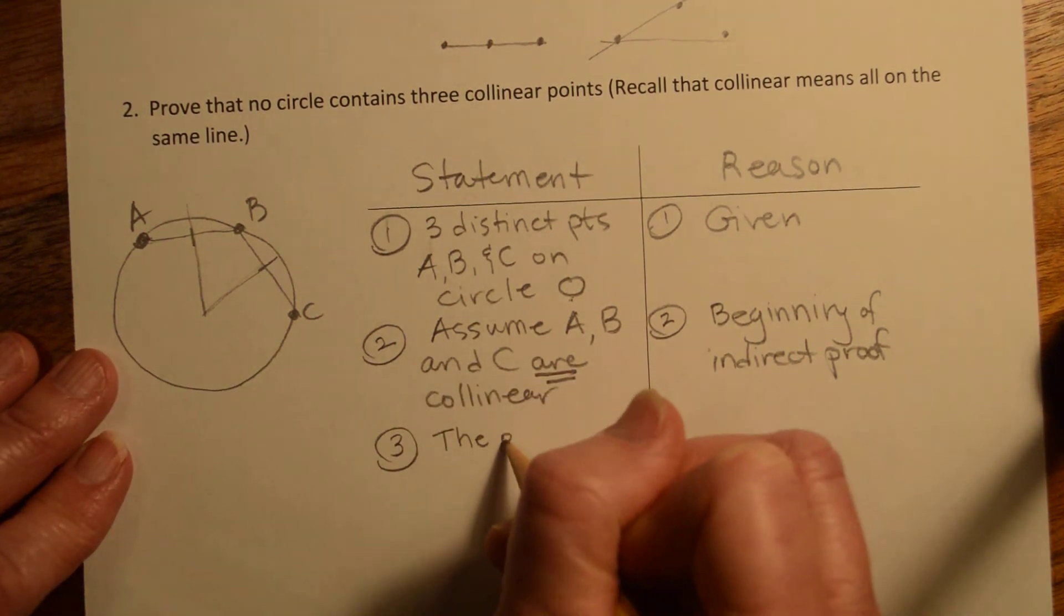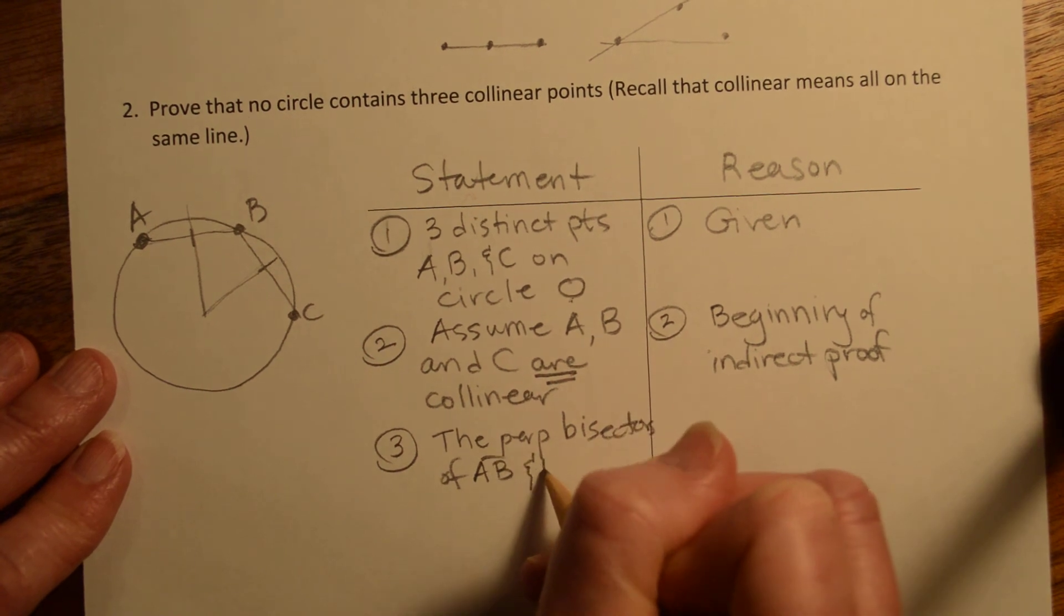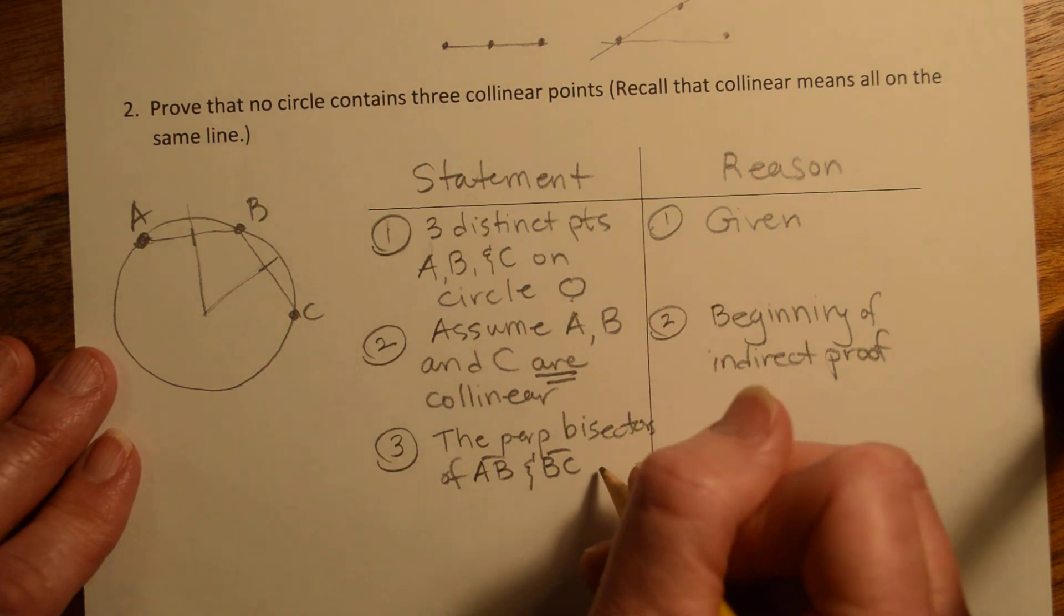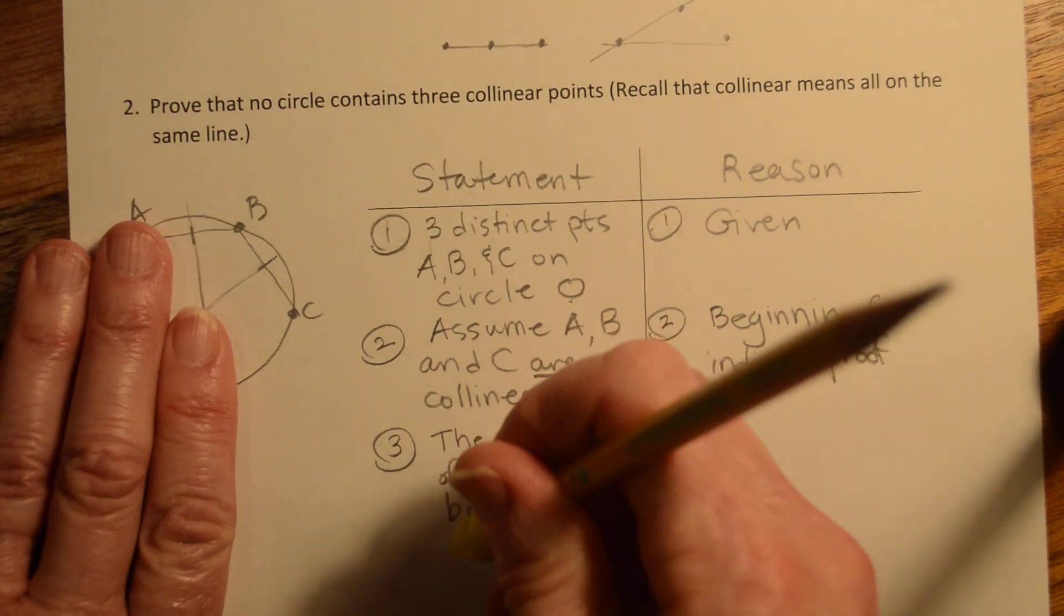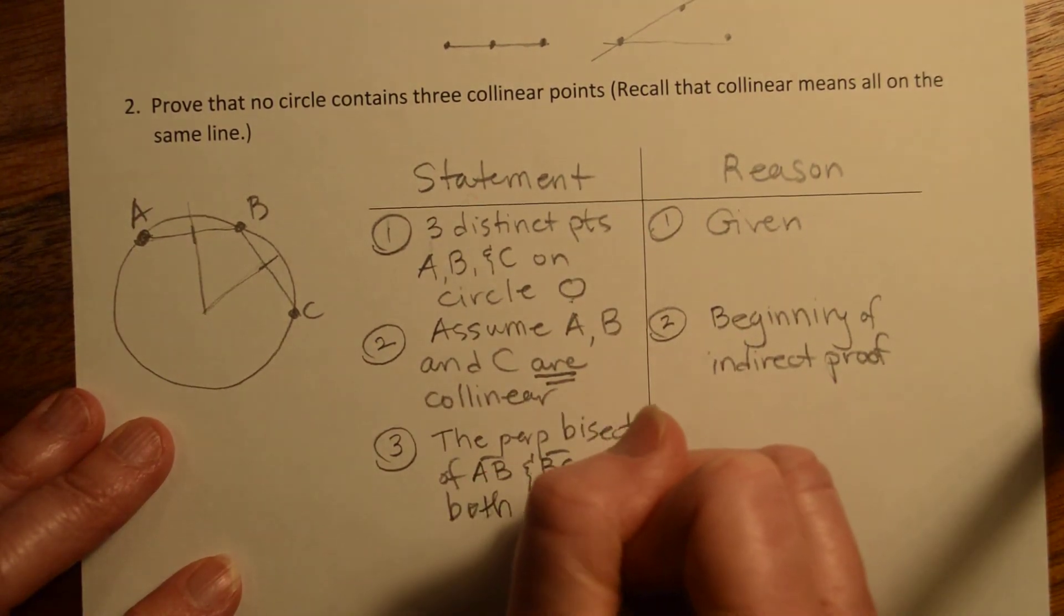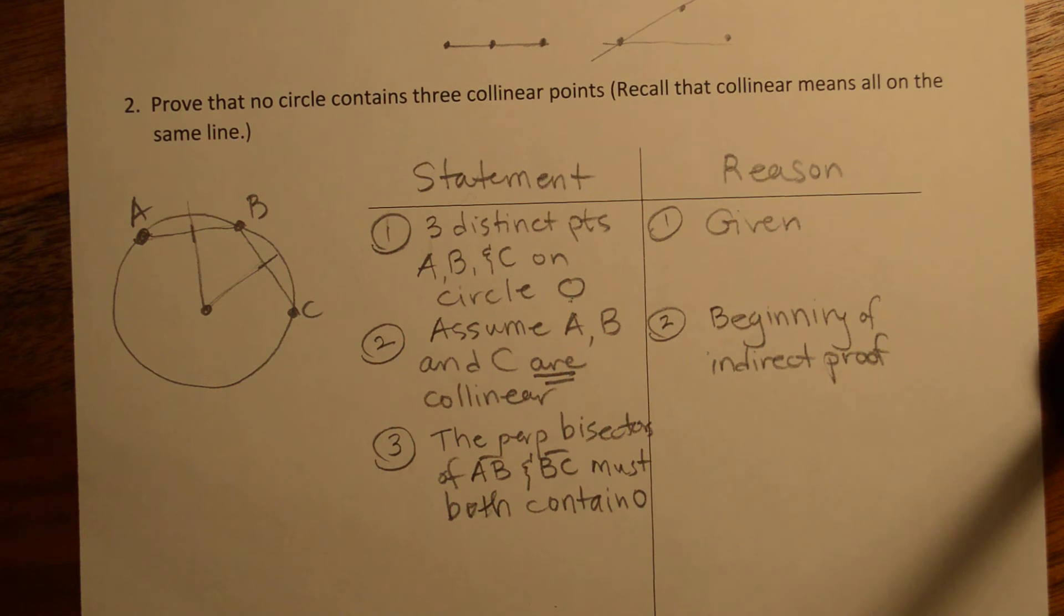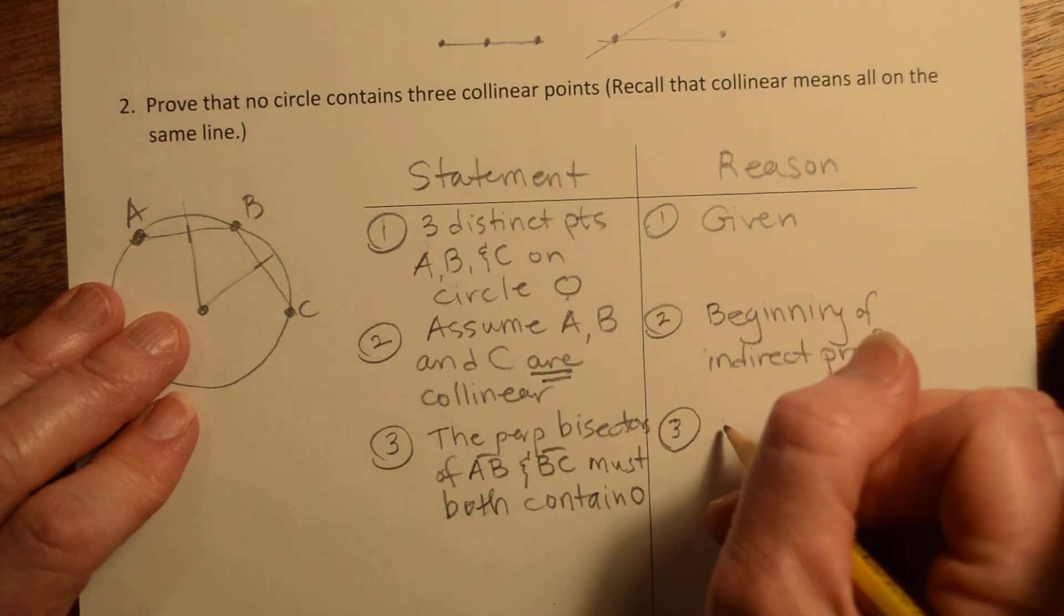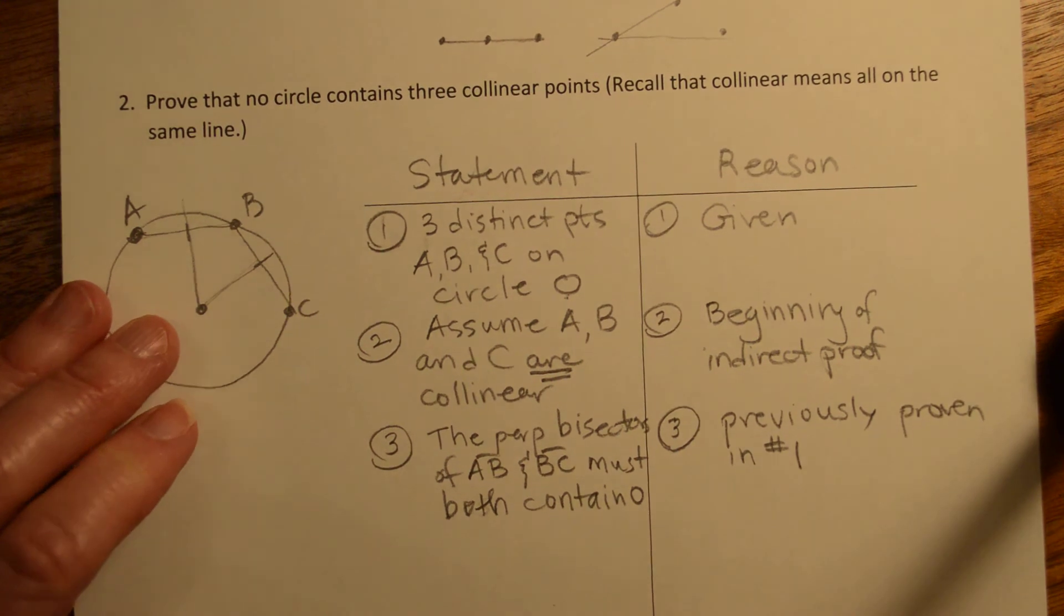All right, so we're going to write the perpendicular bisectors of A, B, and B, C must, sorry, I'm going to do these steps in the reverse order. They must both contain O, which is the center of our circle. All right, and the reason is this is problem one, or previously proven. Number one.